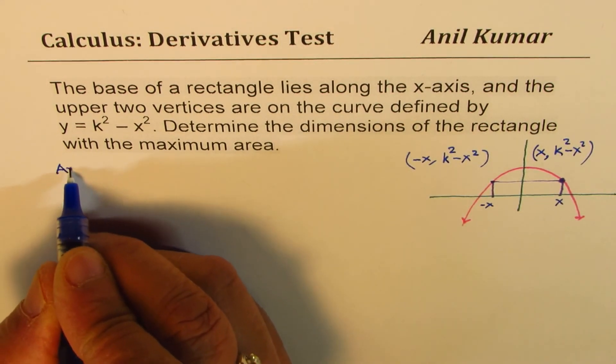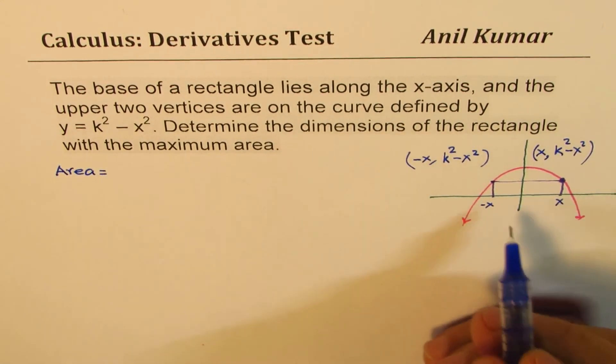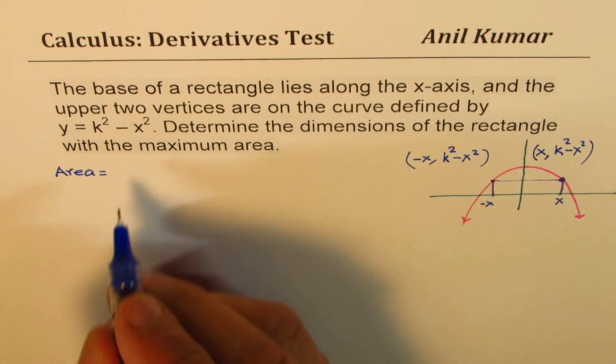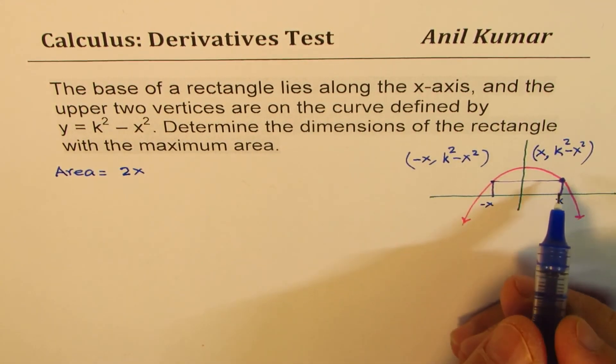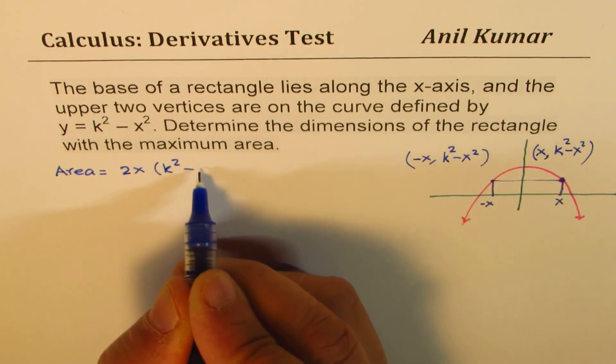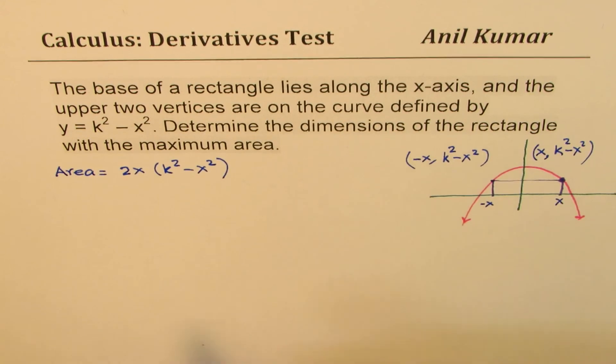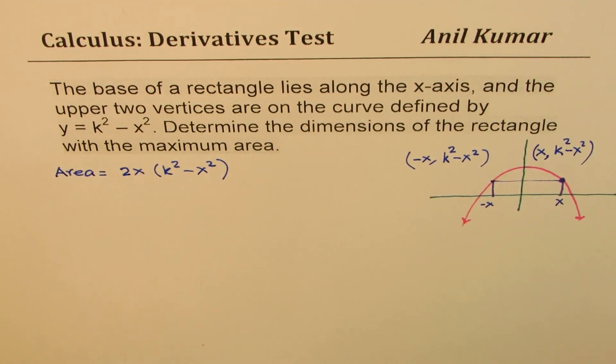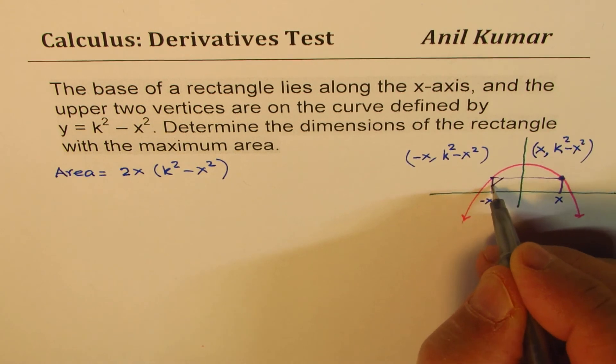Area of the rectangle will be base times height. So base is 2x. And the height is the y value, which is k squared minus x squared. Perfect. So that is how you get your formula. Base times height gives you the area. So we know this area now.